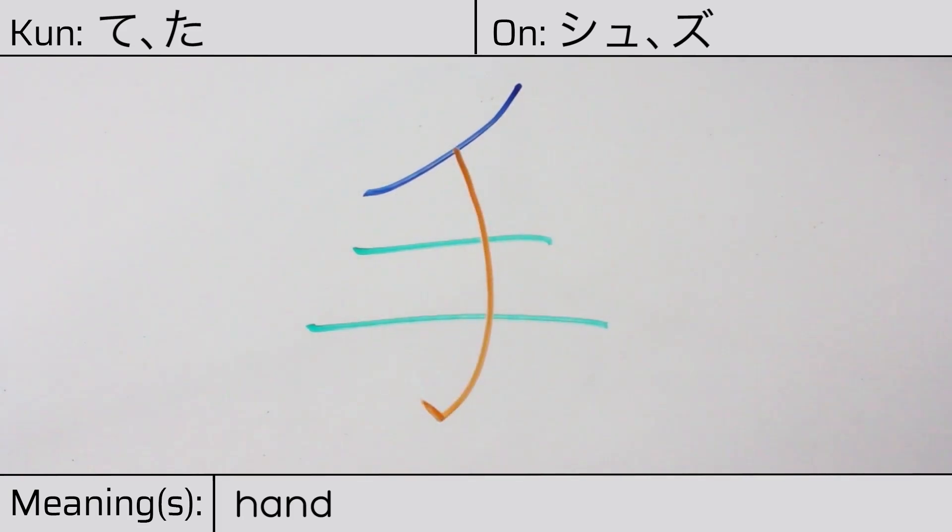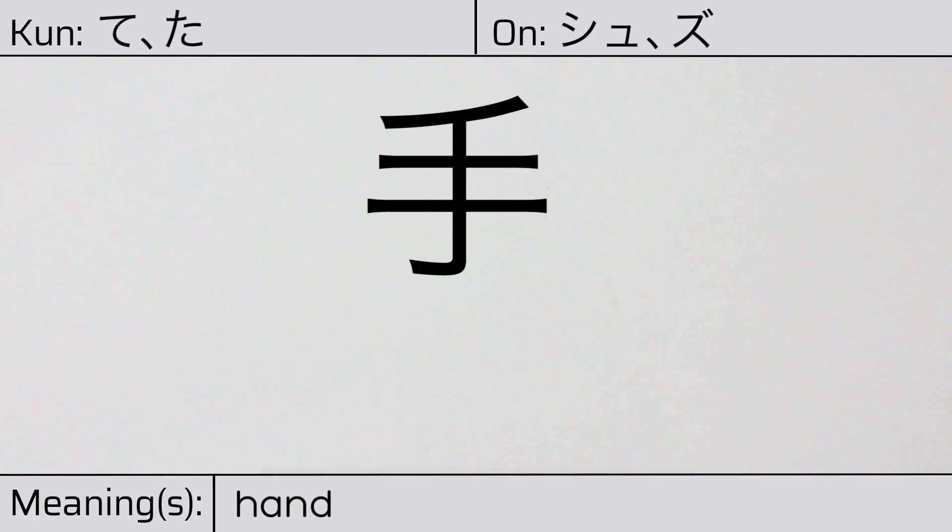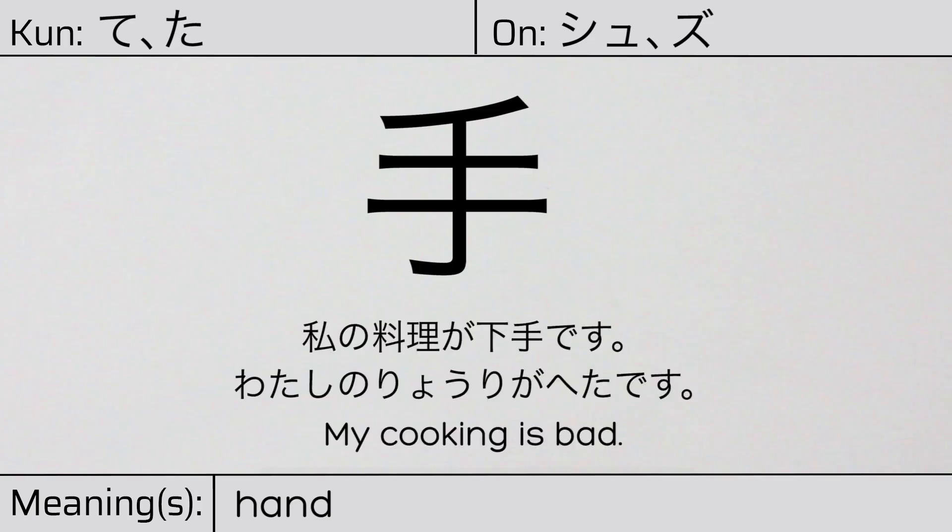You can remember this kanji by thinking of it as looking like the lines of a palm. Our example sentence is: 私の料理が下手です — My cooking is bad.